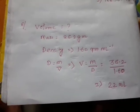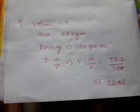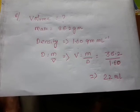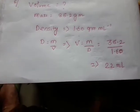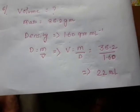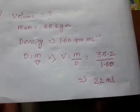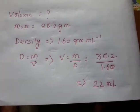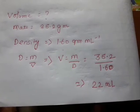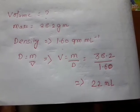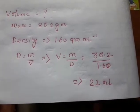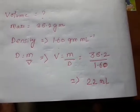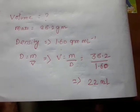Mass is given as 35.2 and density is 1.6. Using density equals mass by volume, volume equals mass by density: 35.2 divided by 1.6. If you solve this, the answer will come to 22 ml.